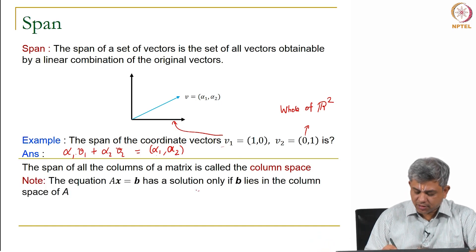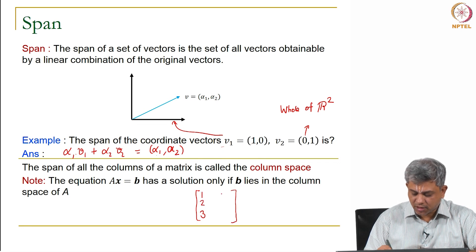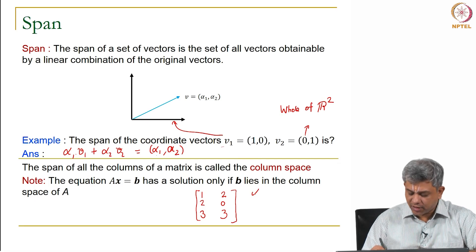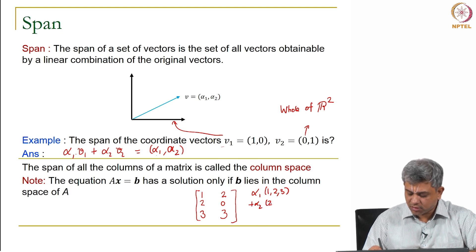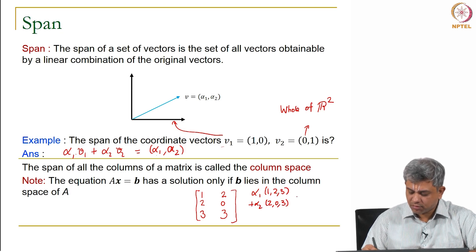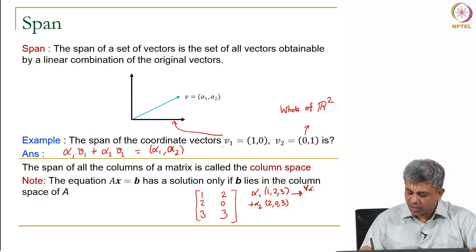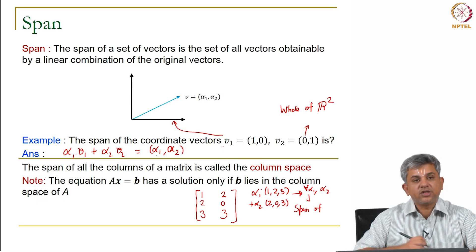Taking the same example: all the vectors that you will get of the form α1 times [1,2,3] plus α2 times [2,0,3] for all α1 and α2—this will be the span of these two vectors.